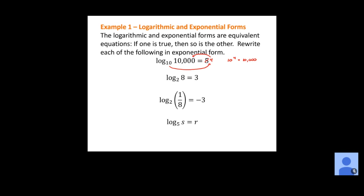The next one: we take our base, raise it to this power, and it should equal the value inside the logarithm. So we rewrite this as 2 to the third power equals 8. Then we take 2, raise it to the negative 3 power, and that equals 1/8. So 2 to the negative 3 equals 1 over 8. Finally, this last one has variables, but we do it exactly the same way: 5 to the R equals S.